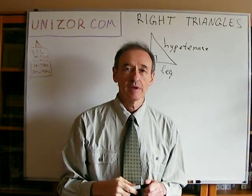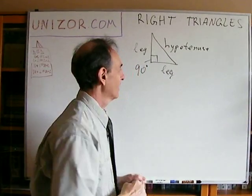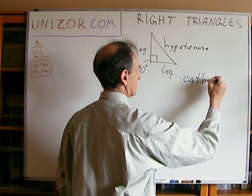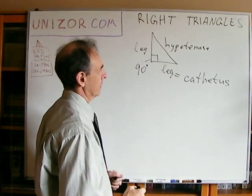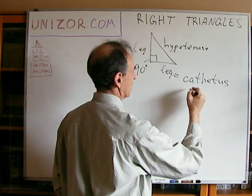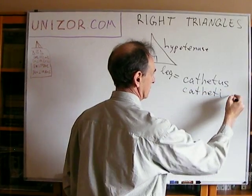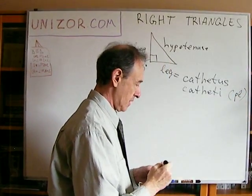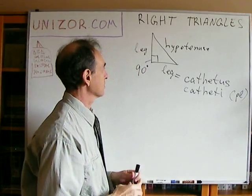That's a short name. There is a more scientific name — it's 'catetus.' And in plural, when you're talking about two sides, it's 'cateti.' That's plural. All right, that's the terminology — nothing more than that.